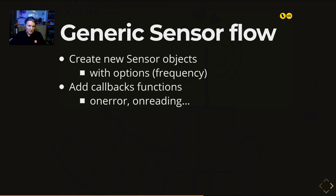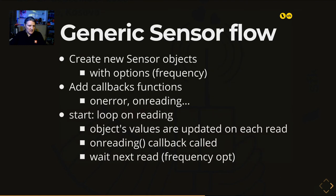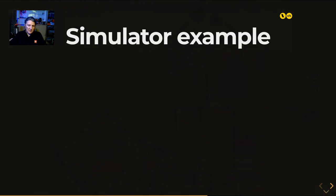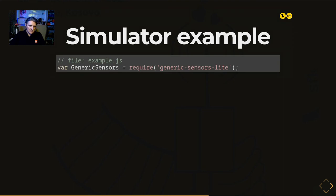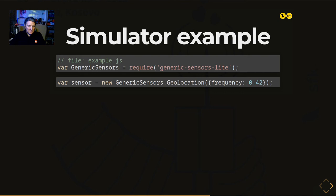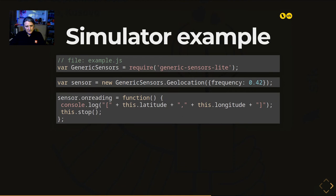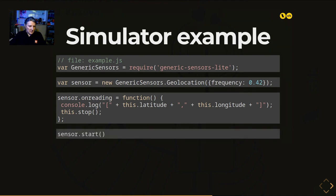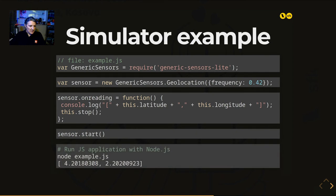The flow is straightforward: create a sensor object, set options like frequency (e.g., read each second), set the callback function — the most important being onreading, which gets the value back — then start it. It loops, updating the value on each read, calling the onreading callback, sleeping until the next read, then stopping. Here's an example simulating the sensor: import generic-sensor-lite, create a Geolocation sensor, adjust frequency to below once per second, set the onreading callback to print latitude and longitude, then start it to print your position in Node.js.